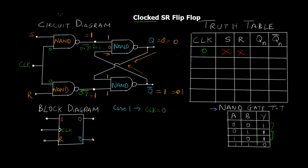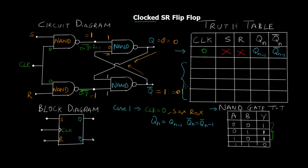When clock is zero, S and R are don't care conditions, and the output Qn equals Qn-1 and Q̄n equals Q̄n-1, which is the previous state. This is the extra control this circuit provides by including the clock. The rest of the four cases act as the basic SR flip-flop. By making clock zero we have control over the flip-flop - irrespective of what S and R are, the output is always going to be the previous state.